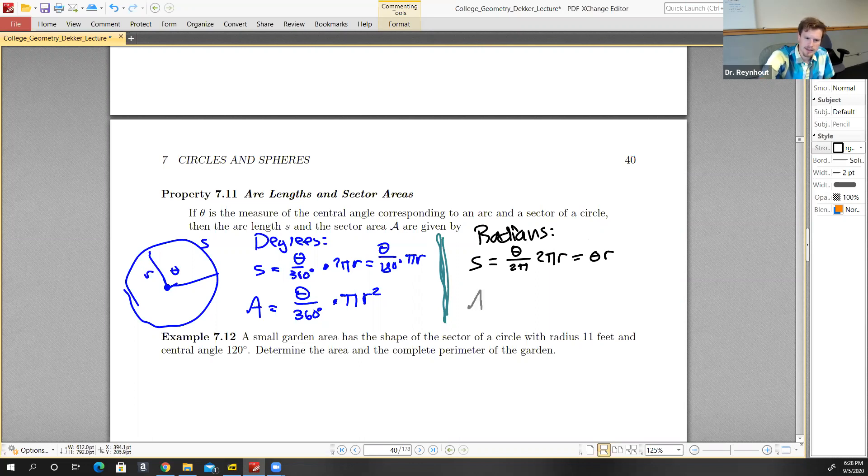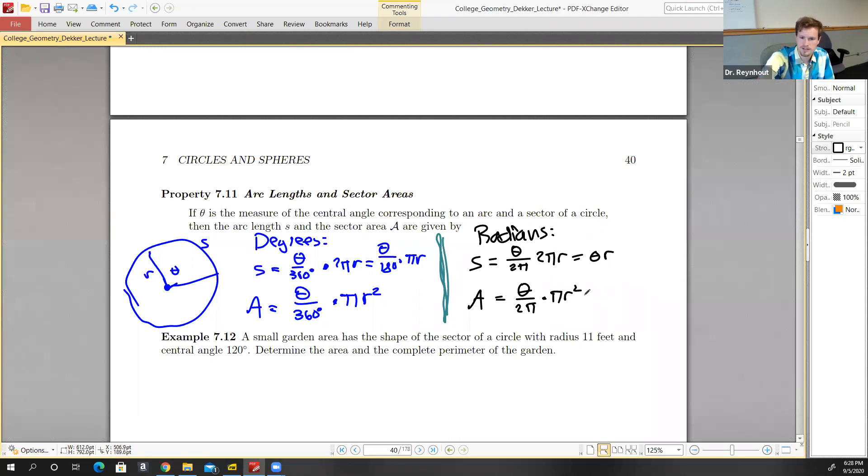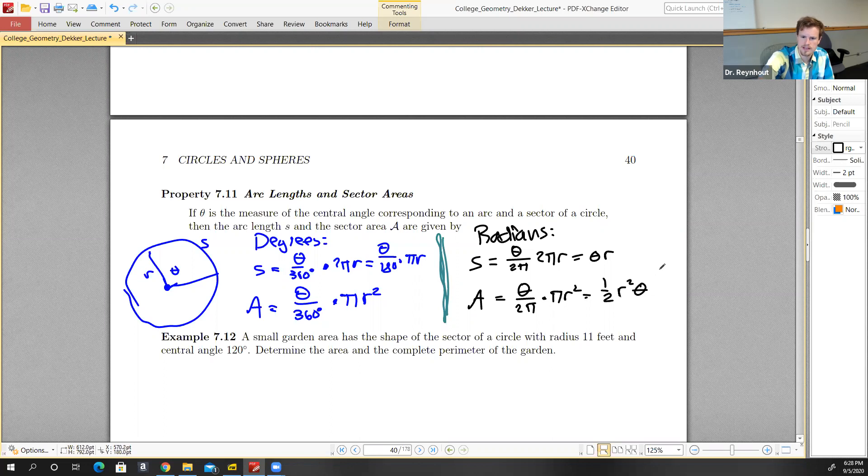And the area of our sector would be theta over 2π - this portion of the circle or the disk - times the area πr². This reduces: the π's cancel out, so we're left with one-half r² times theta.